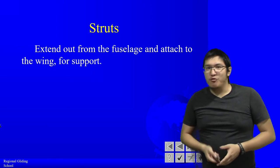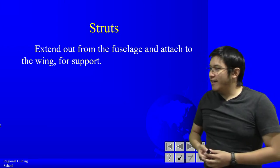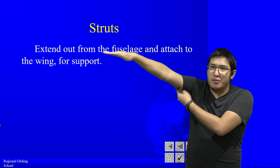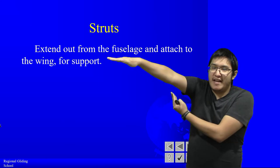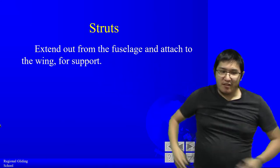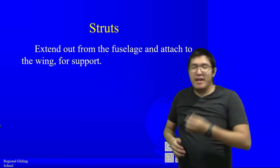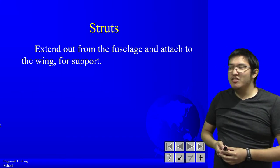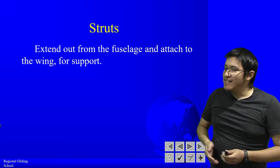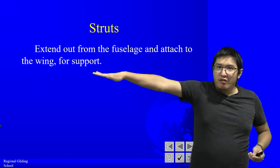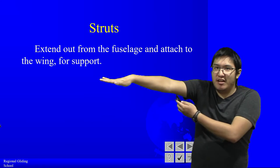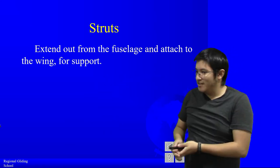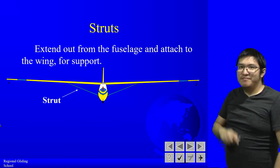Struts extend from the fuselage, attach to the bottom of the wing, and support the wings. You may have seen this in the air cadet gliders, the Schweizer 2-33As. Since they have very long and heavy wings, the struts help ensure they don't droop too much.